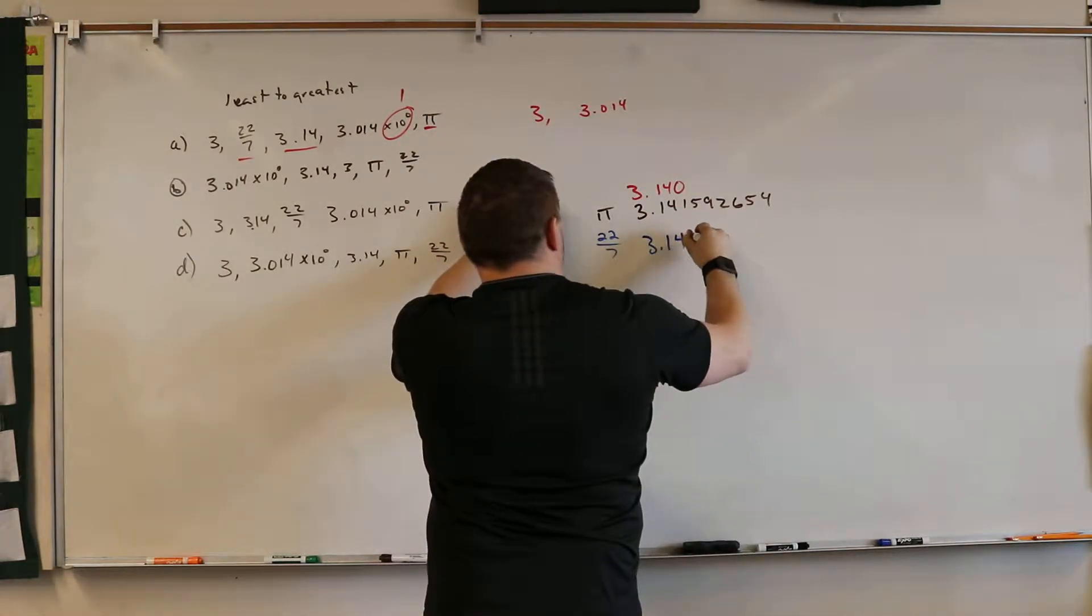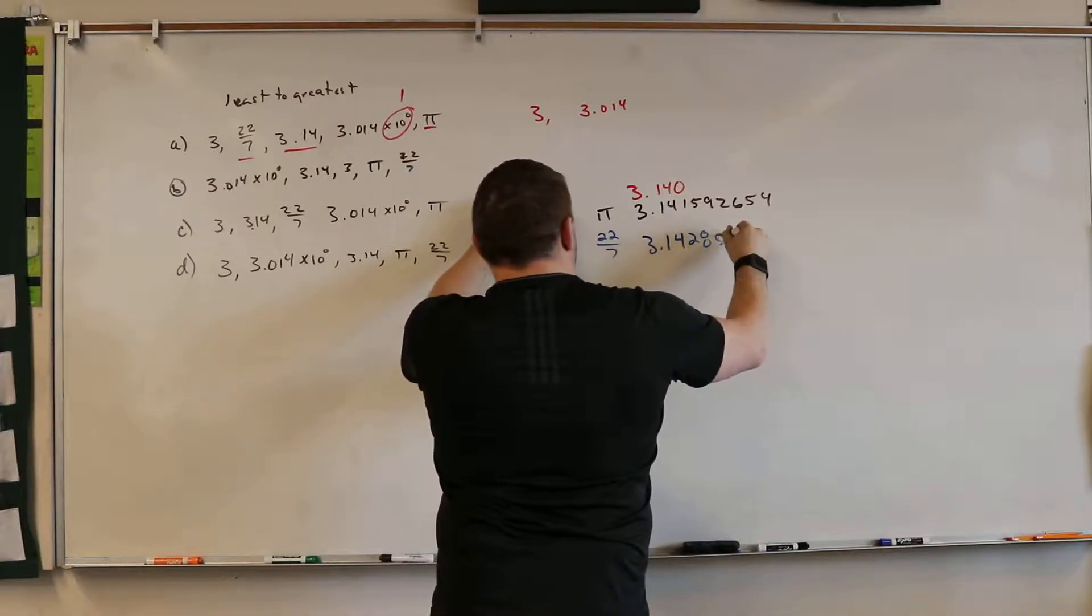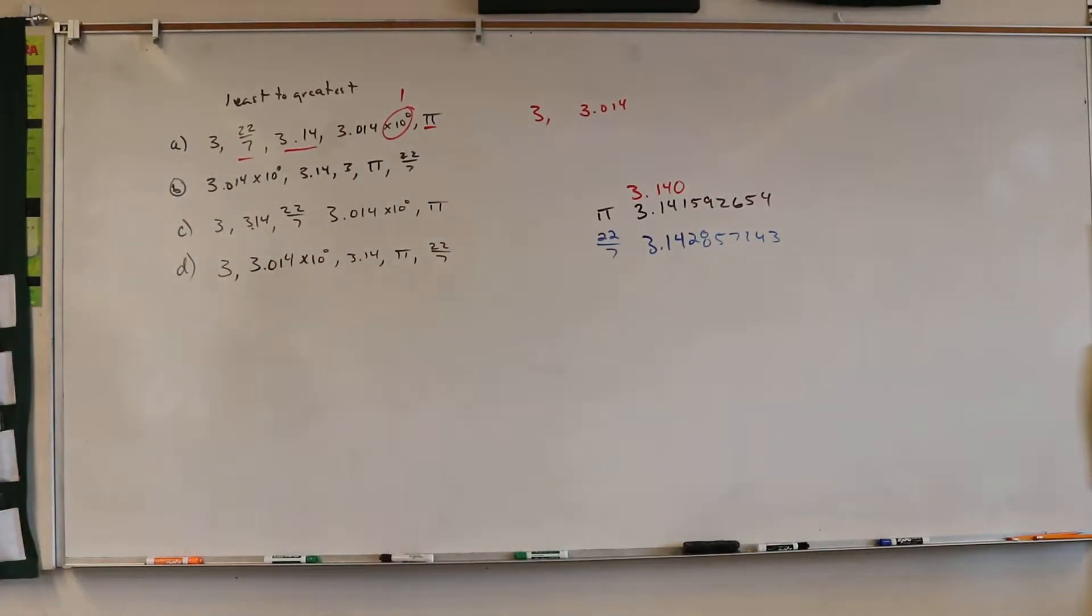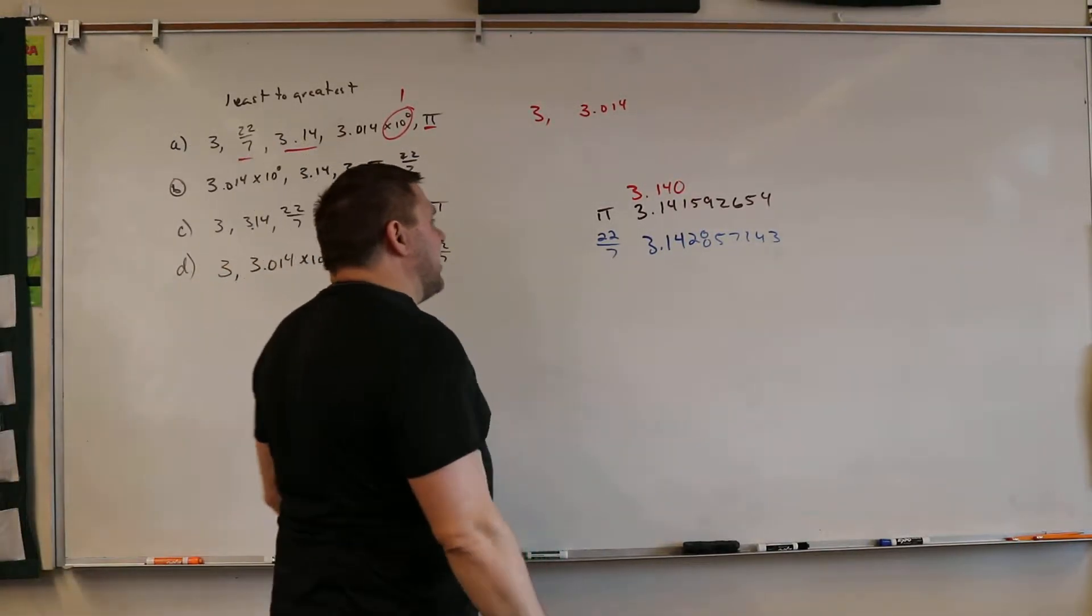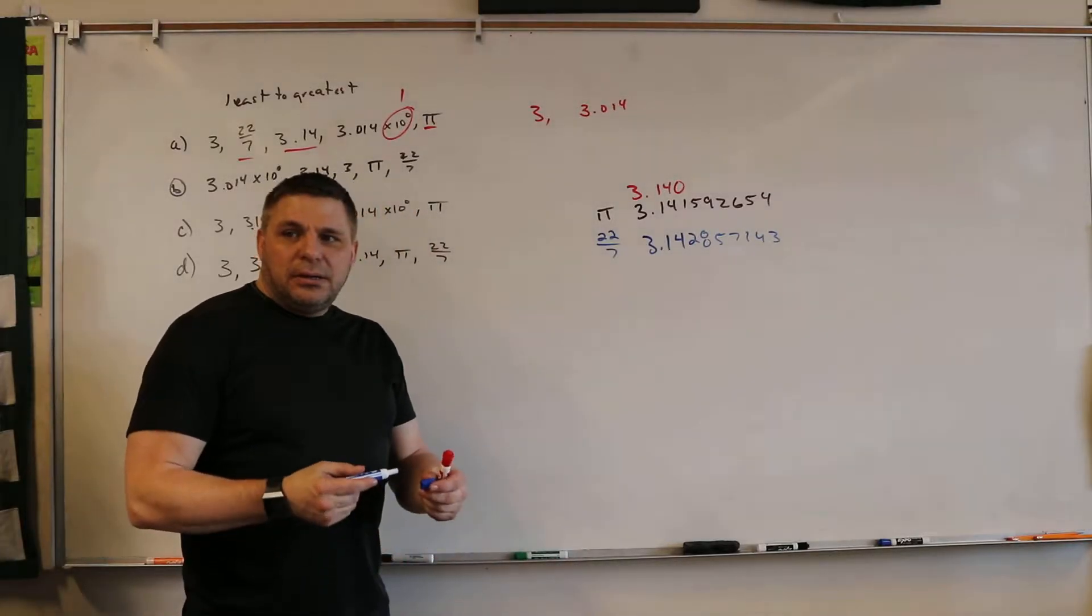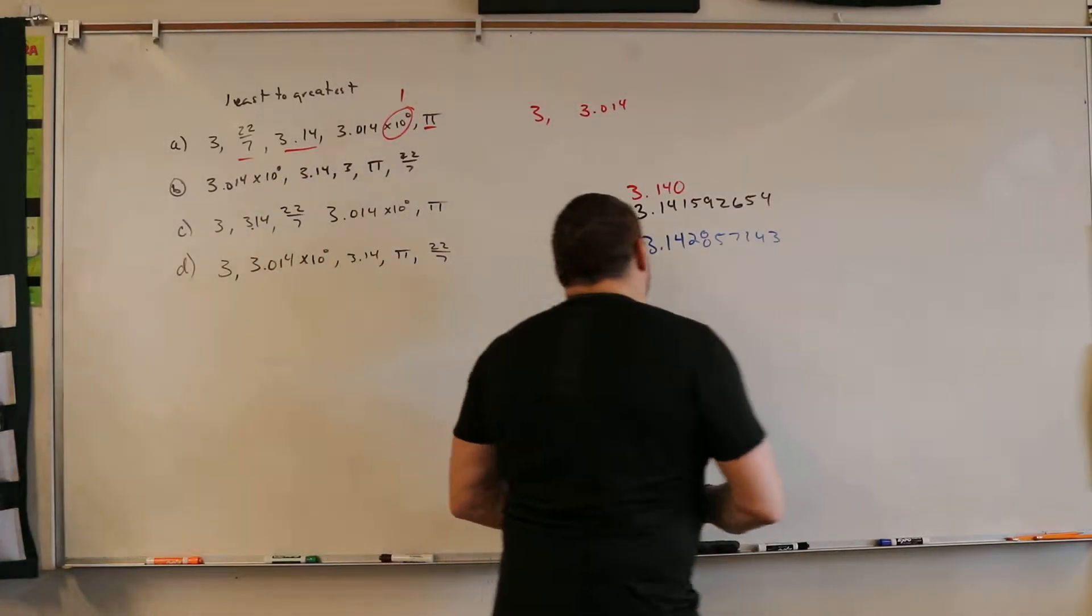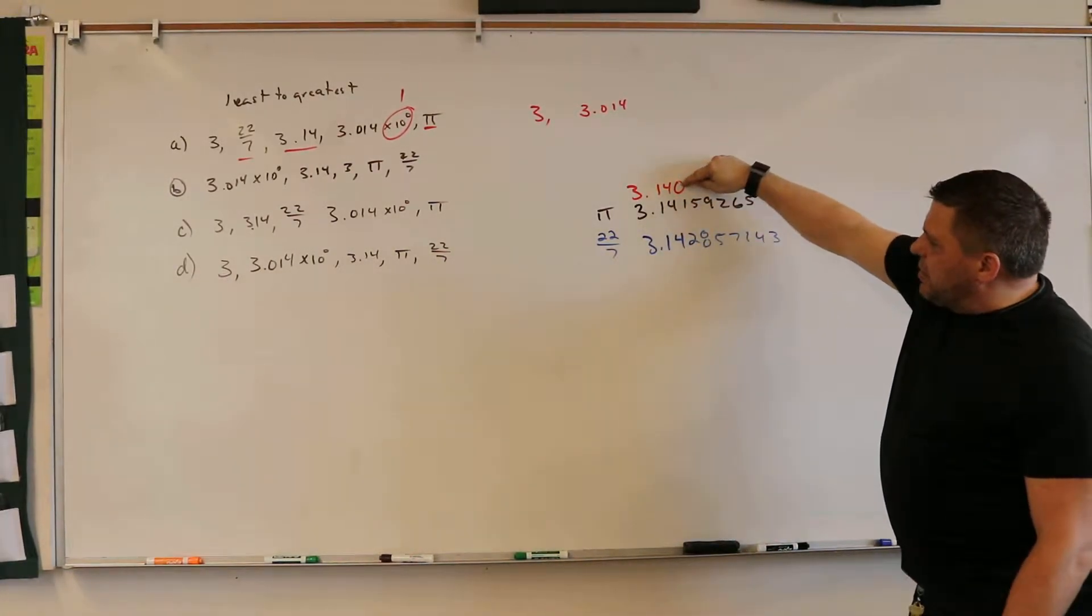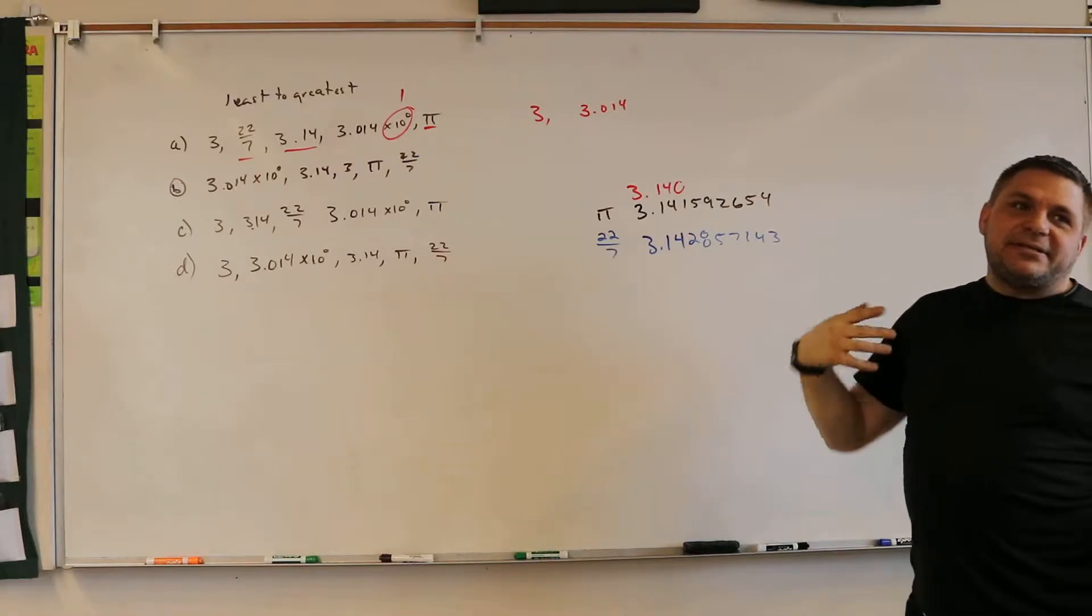What? 2, 8, 5, 7, 1, 4, 3. I think I'm right. Alright, so which one comes first? The chicken or the egg? Okay? So they're all 3.14's, but then it goes 0, 1, 2. Does that make sense?